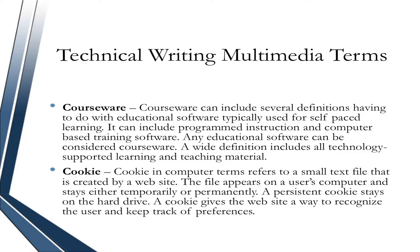Cookie – In computer terms, a cookie refers to a small text file that is created by a website. The file appears on a user's computer and stays either temporarily or permanently. A persistent cookie stays on the hard drive. A cookie gives the website a way to recognize the user and keep track of preferences.